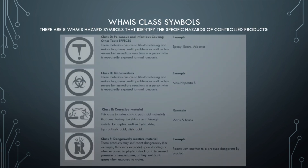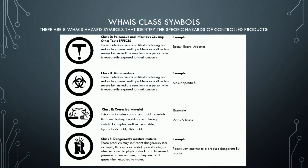Class D: Poisonous and Infectious — causing other toxic effects. These materials can cause life-threatening and serious long-term health problems, as well as less severe but immediate reactions in a person who is repeatedly exposed to small amounts. Examples: epoxy, resins, asbestos.